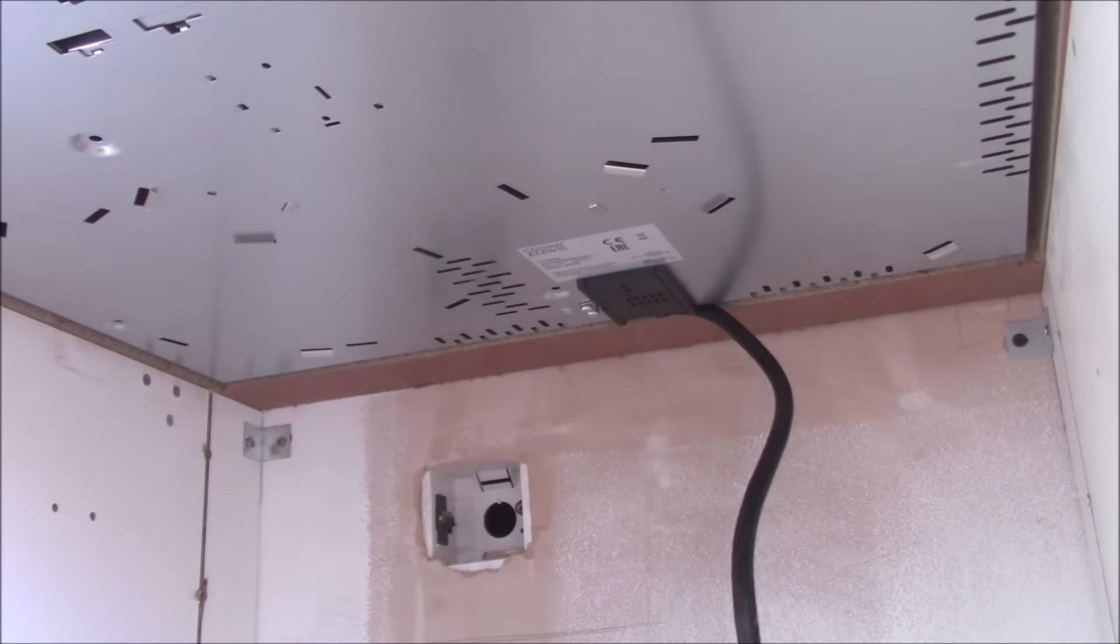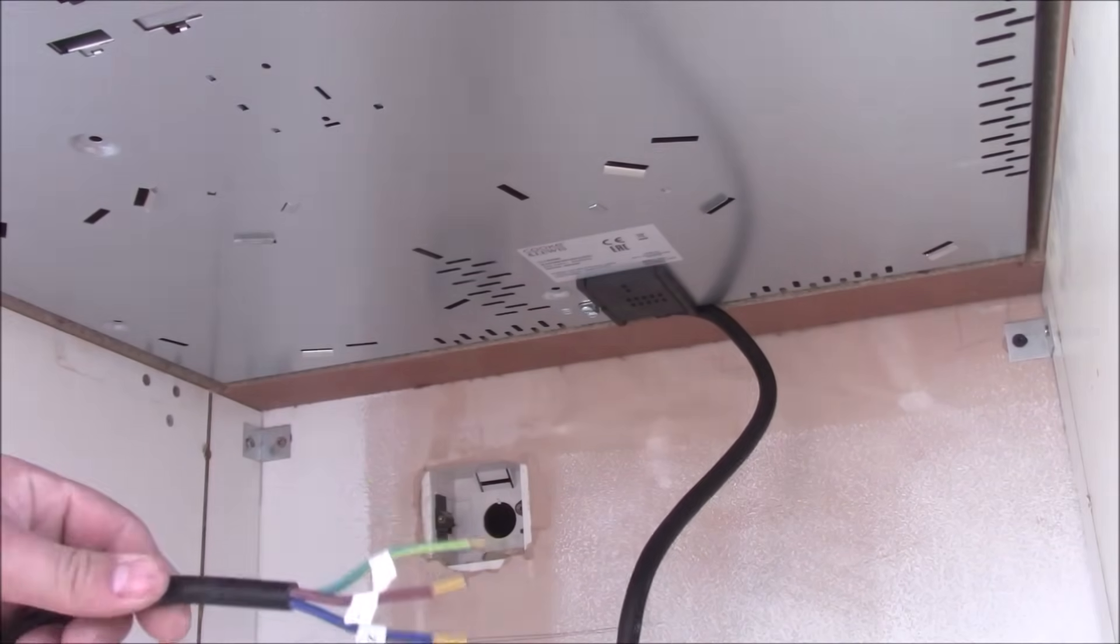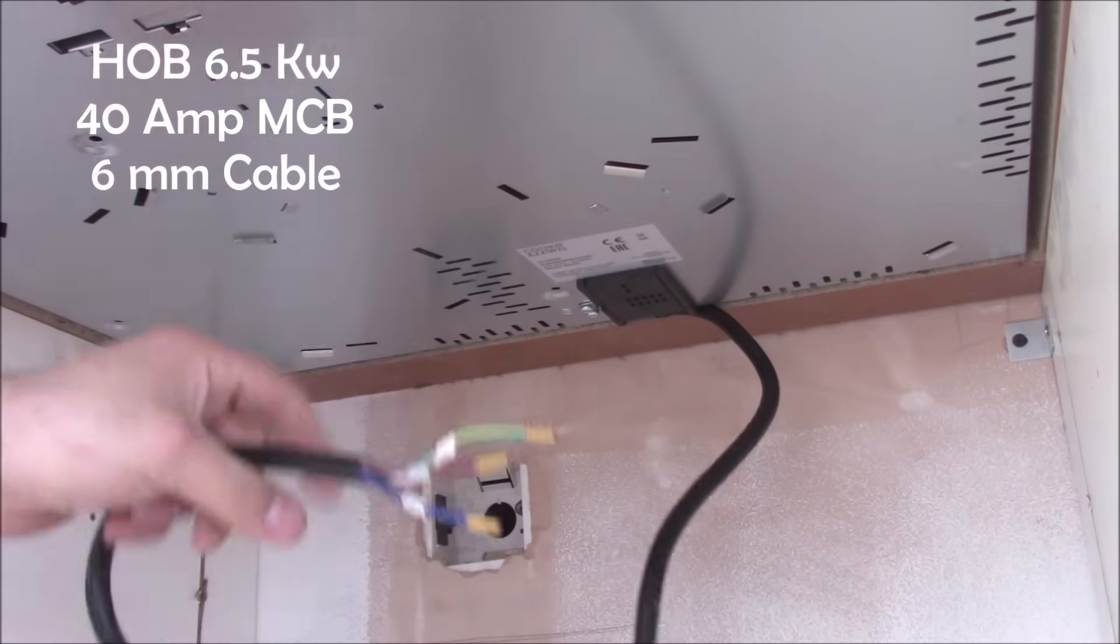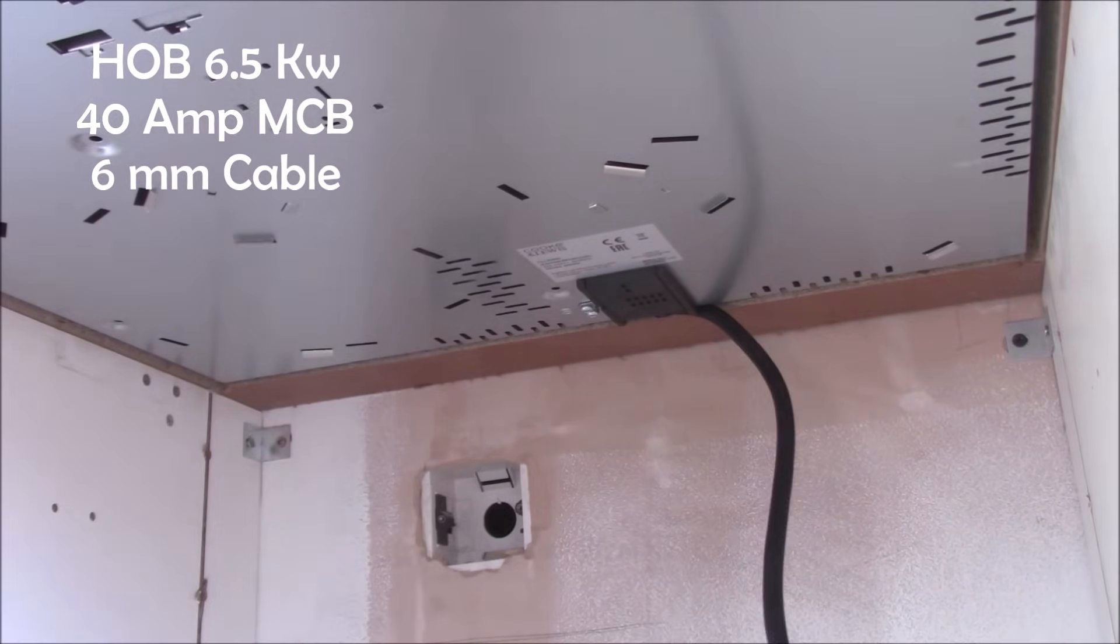So now let's do the wiring. You see the thick cable. This hob is 6.5 kilowatts, so you need at the consumer unit you need 40 amp MCB and 6mm cable going straight up to the switch and from the switch up to here.